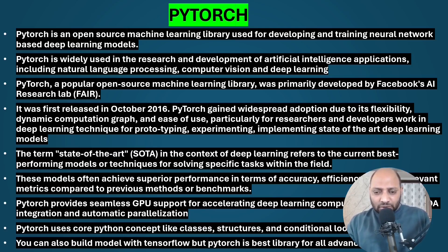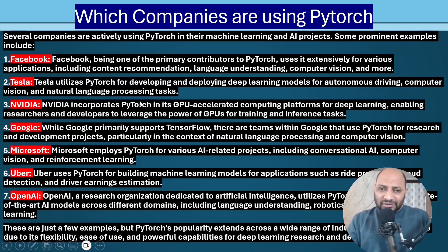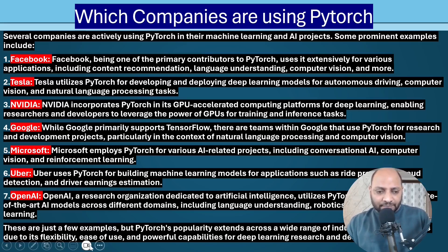When we talk about GPU support, there is a concept called CUDA integration, which I will explain in detail. PyTorch uses core Python concepts like classes, structures, and conditional loops. You can also build models with TensorFlow, but PyTorch is the best library for advanced models. Companies using PyTorch heavily include Facebook, Tesla, NVIDIA, Google, Microsoft, Uber, and OpenAI — top tech companies using PyTorch for large models and pre-trained data, thanks to its GPU integration and flexibility.